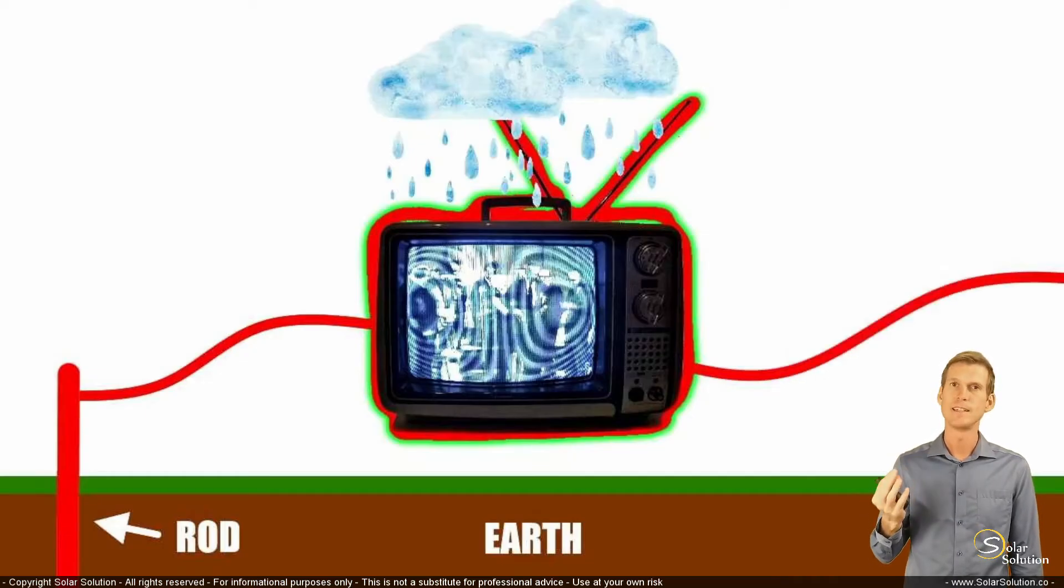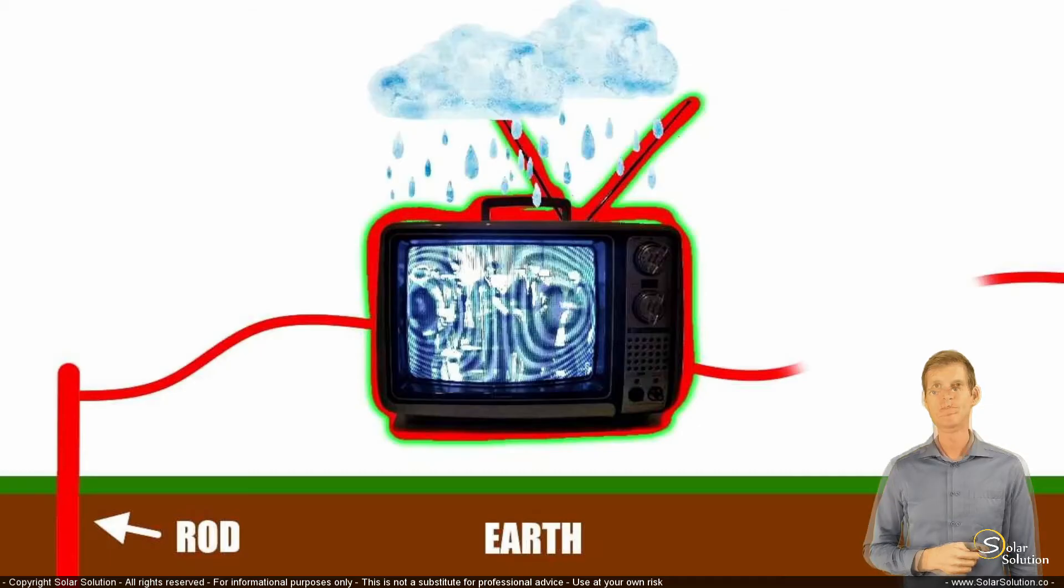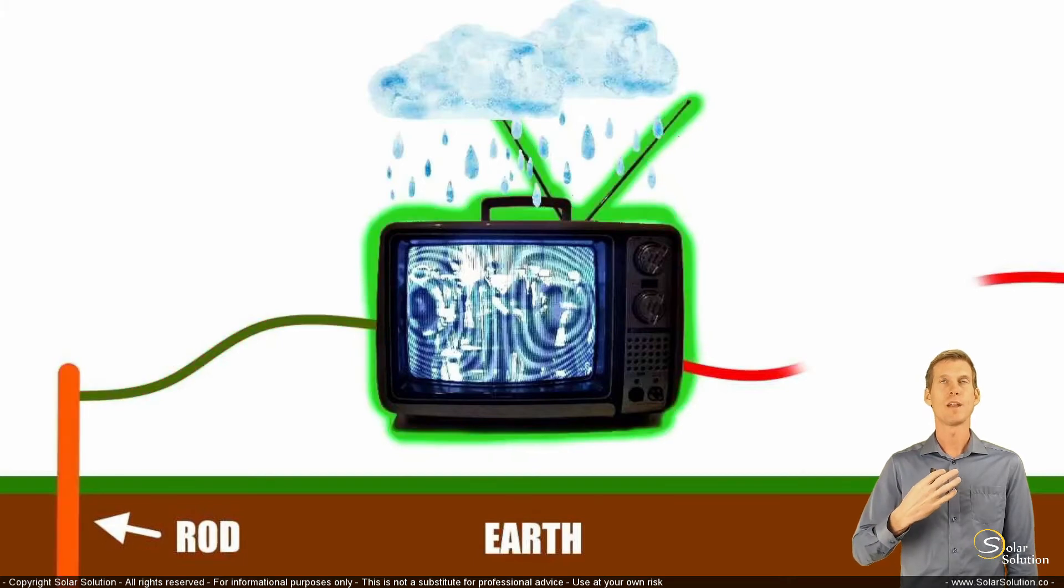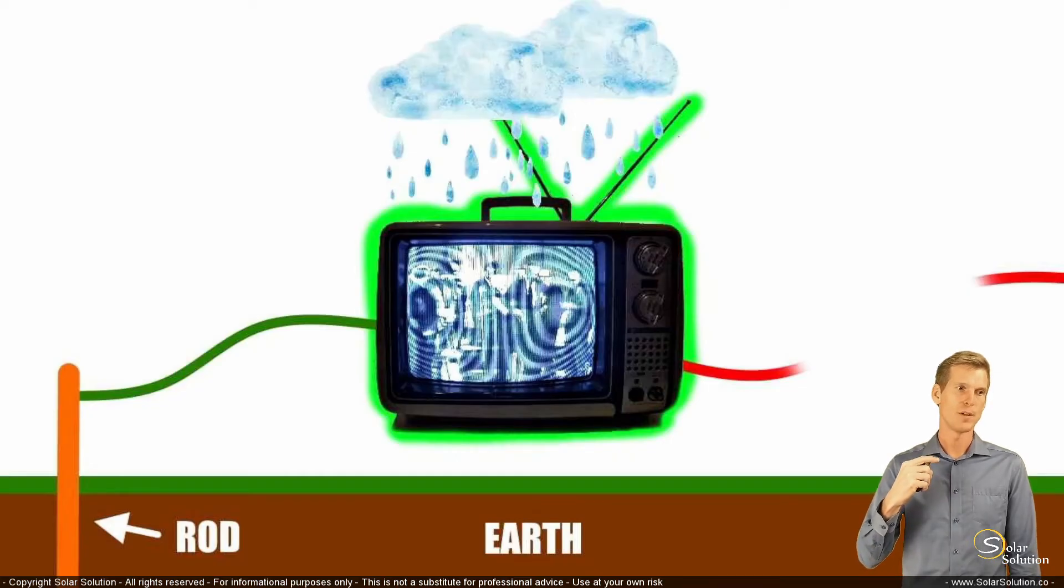It's either way your earth leak detection or your breakers or your fuses, but something will kick in and will disrupt the circuit. It will cut off the power towards your television. So of course, it's a very simple example or explanation of how an earthing system works, but at least you understand what I'm talking about when I'm saying a safe return path, and you can see how it avoids dangerous situations as much as possible.